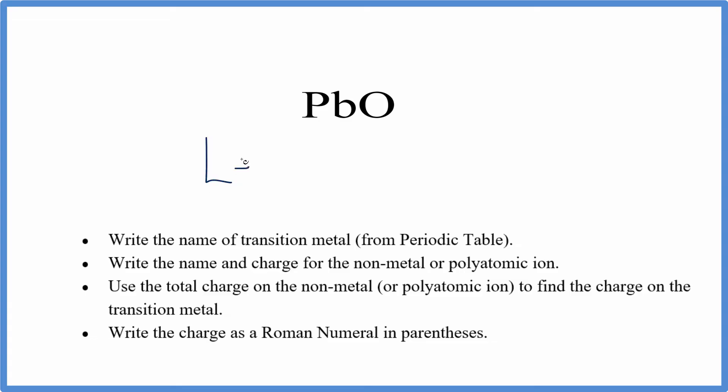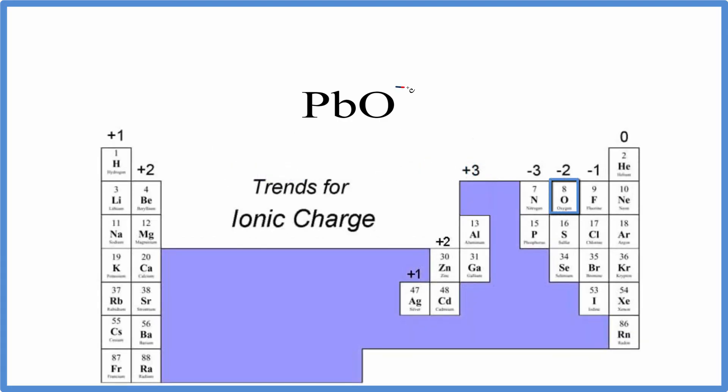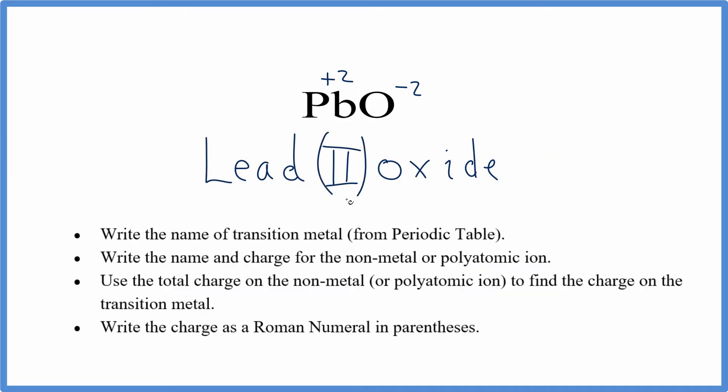For Pb, we write lead and oxygen for O. We get rid of the ending YGEN and write IDE. Since oxygen has a charge of minus 2, we know that the lead has to have a charge of plus 2. That makes this lead 2 oxide.